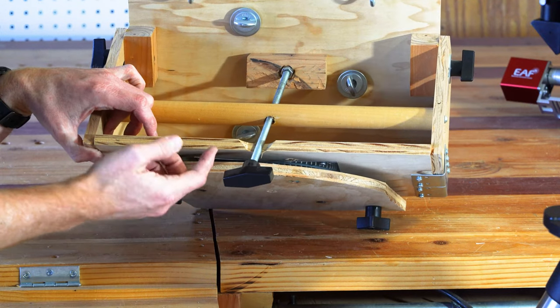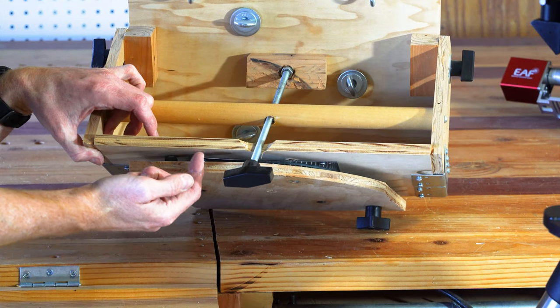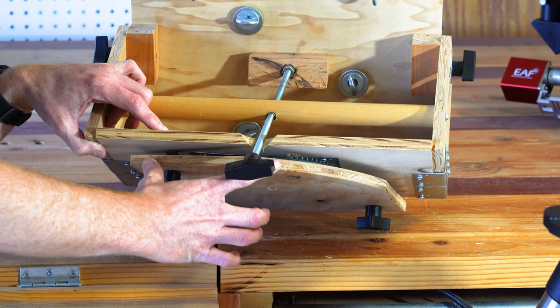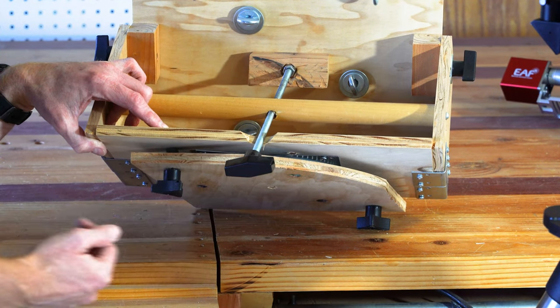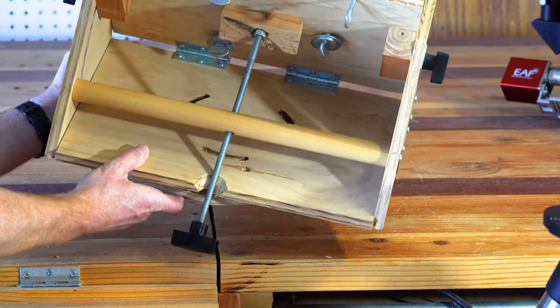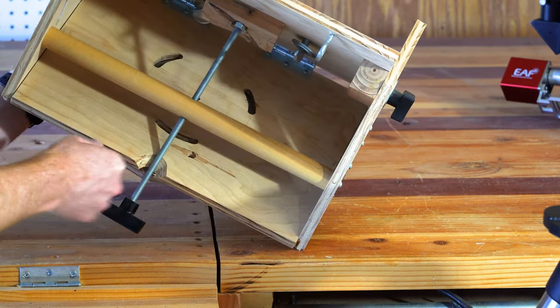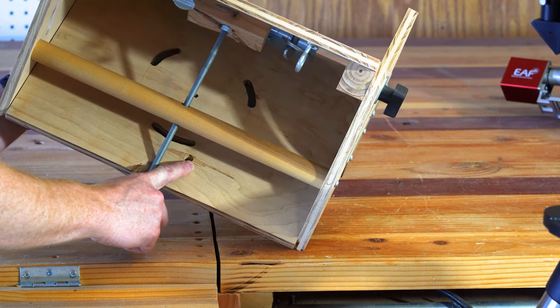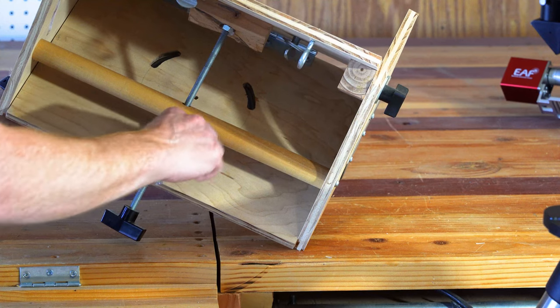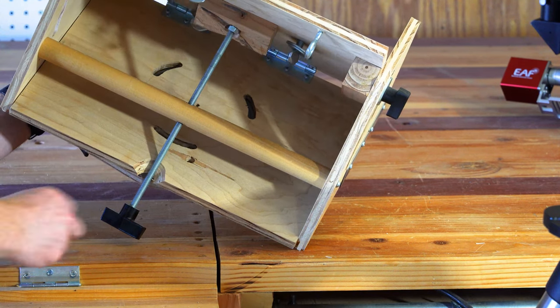The solution to that is to mount the Lazy Susan to the top piece first. Without the bottom piece in there, it's very easy to get those screws in. And then to drive the screws in through that bottom piece, what I did was drill a hole in the top piece so that I could put the screw in and just screw it in from the top like that.